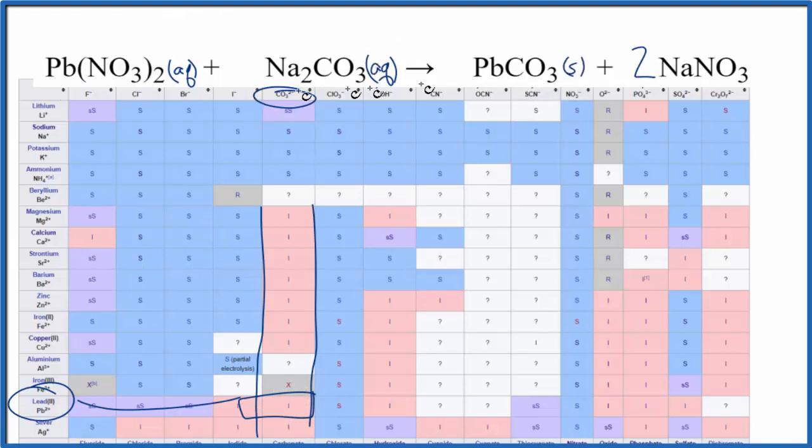In fact, when these two compounds react, this lead 2 carbonate, it's a solid. It's a precipitate. It'll fall to the bottom of the test tube and just sit there. Nitrates and sodium compounds both very soluble. Put a little AQ, they'll dissolve. So we have our states.